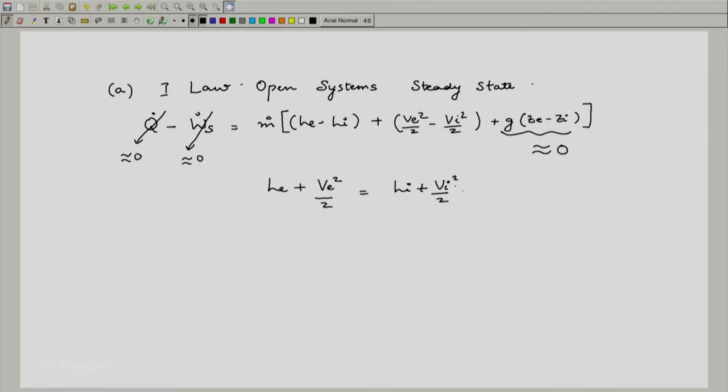One will notice that v i which is the inlet velocity is given and it is not really significant, one could have as well neglected it. In fact, I would like you to do that exercise. We can take it here and h i can be read out from the steam tables because the conditions are given. It is 40 bar or 4 megapascals and 600 degree centigrade. This can be read out, this is 3674.9 kilojoule per kg.